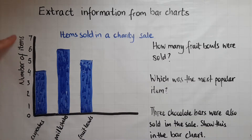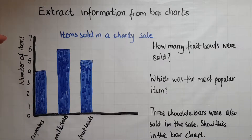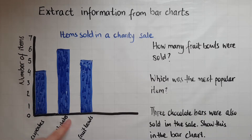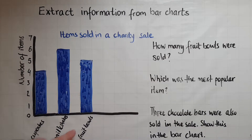We've got the number of items on one side, so from 0, 1, 2, 3, 4, 5, 6, and 7, and which items were sold at the bottom. So we've got cupcakes and there were four of them, milkshakes six, and fruit bowls there were five.